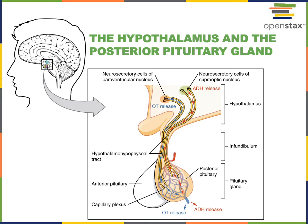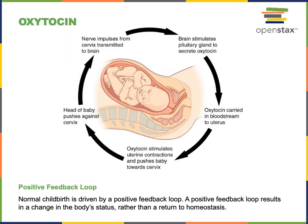Oxytocin and antidiuretic hormone are examples of neurohormones released from the posterior pituitary gland by the neurosecretory cells of the hypothalamus. Oxytocin stimulates a positive feedback loop during childbirth in response to stretching of the cervix. When the baby's head pushes against the cervix, stretch receptors relay information through sensory nerves into the hypothalamus, stimulating the neurosecretory cells that release oxytocin from the posterior pituitary gland.